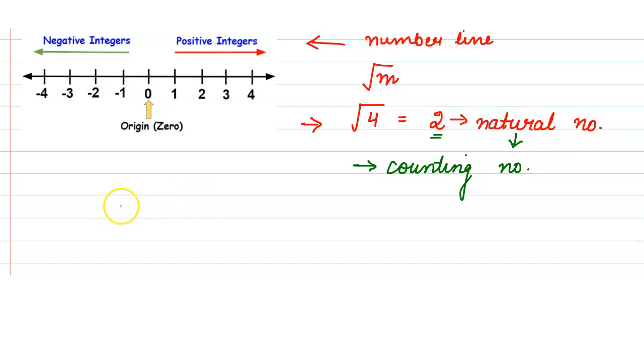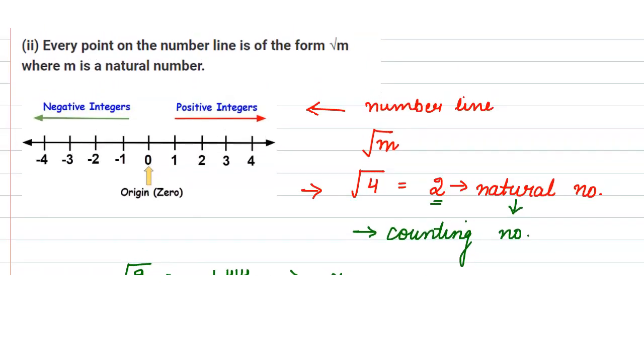If we take root 2, you will get 1.414 which is not a natural number. So this statement is false.